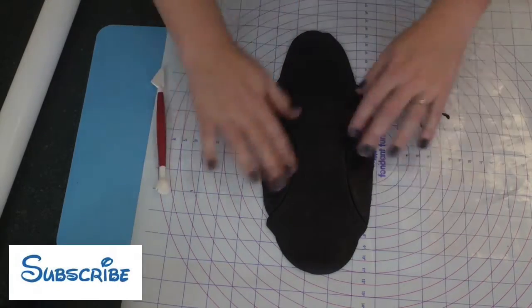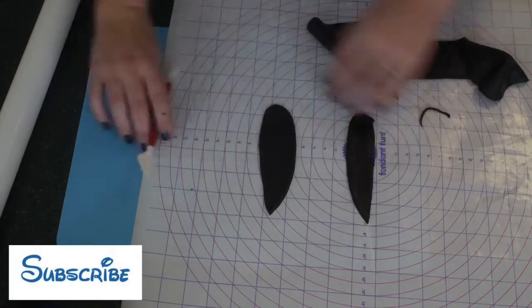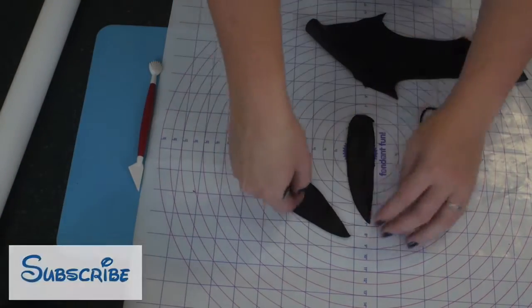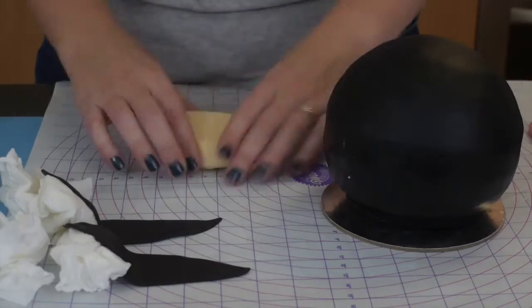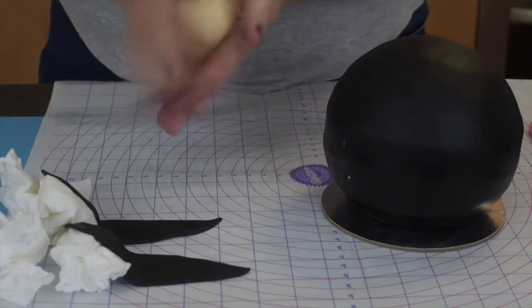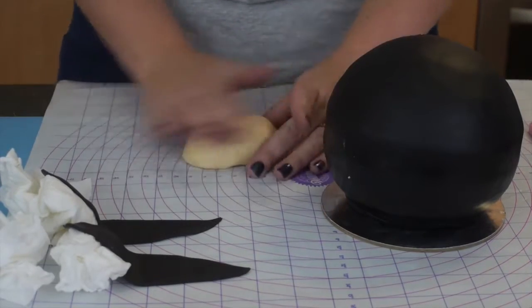Then it's time to cut out the ears. So just roll out some more black fondant and freehand cut out a couple of ears—we know what Goofy's ears look like. Then put them off to the side with a little bit of tissue underneath just to give them a little bent out shape, because you don't want them sitting flush with the head.